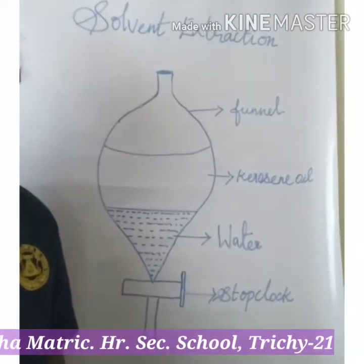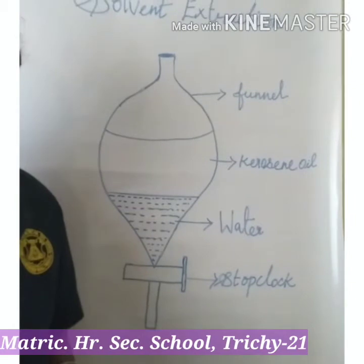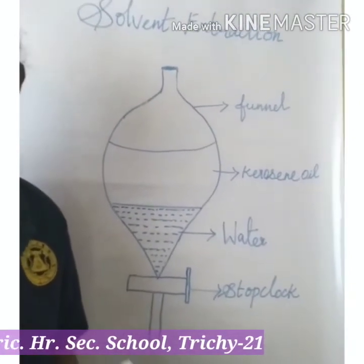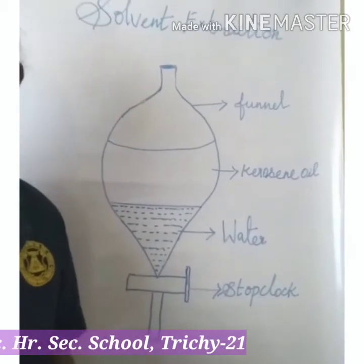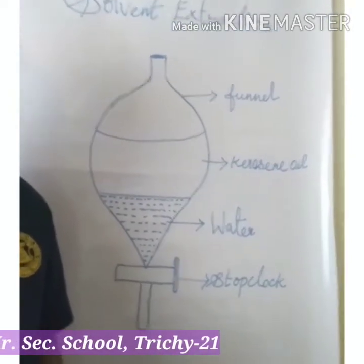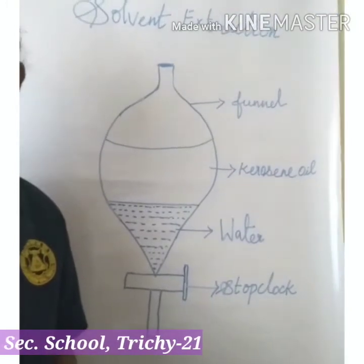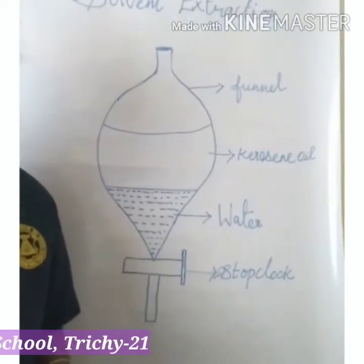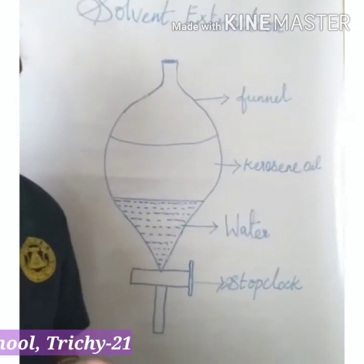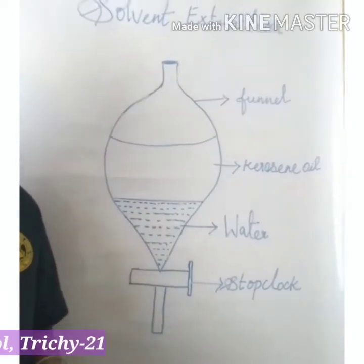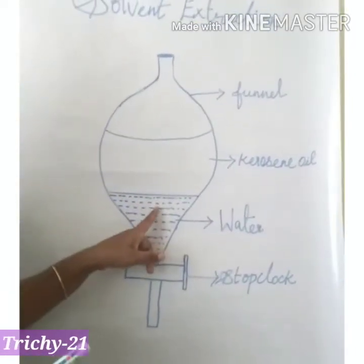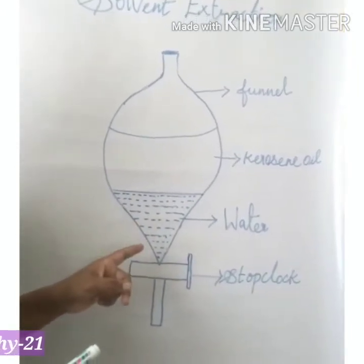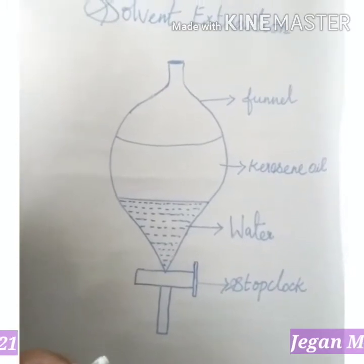Miscible means two liquids that can be mixed with each other. Immiscible means two liquids that cannot be mixed together. This method works on the principle of difference in solubility of two immiscible liquids in a suitable solvent.